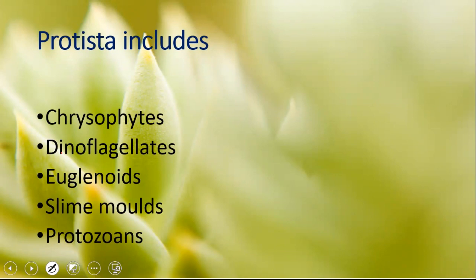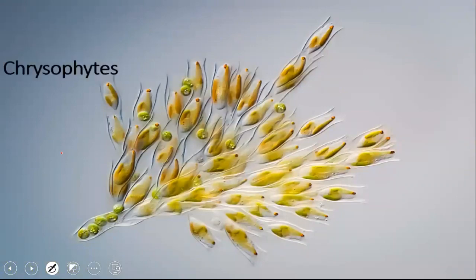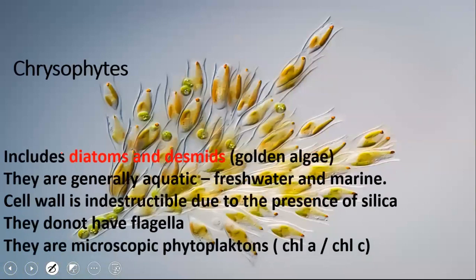Chrysophytes include diatoms and desmids, and they are considered golden algae. They are generally aquatic — found in both fresh water and marine environments. One important characteristic frequently asked in MCQs is that they have an indestructible cell wall due to the presence of silica. Organisms that do not have flagella and have an indestructible cell wall are chrysophytes.